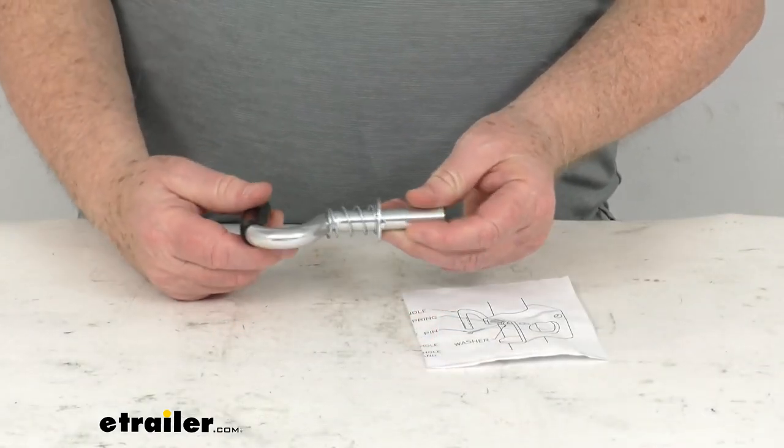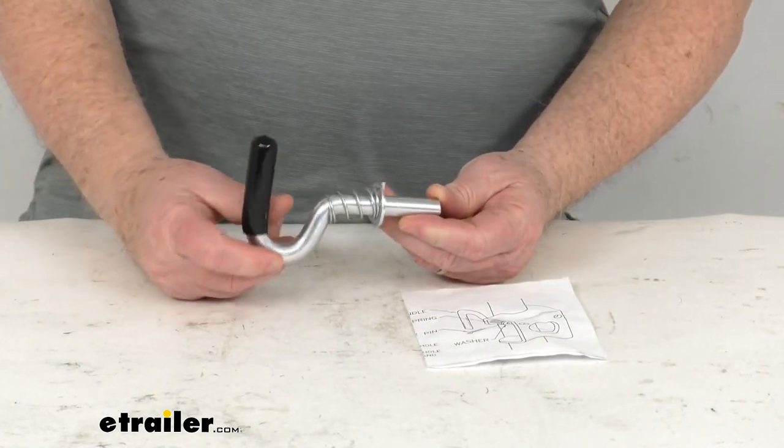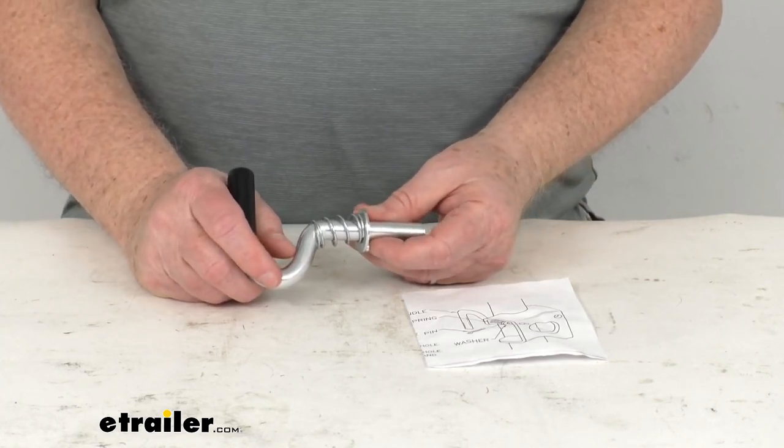This part is designed to fit the Dutton Lanson Pull Pin Easy Swivel Trailer Jack. We do sell that jack separately on our website. It's part number DL22580.